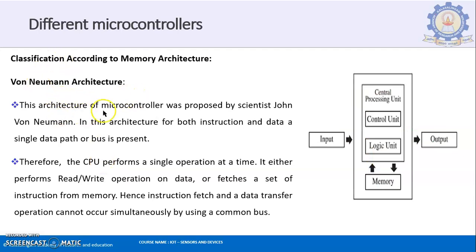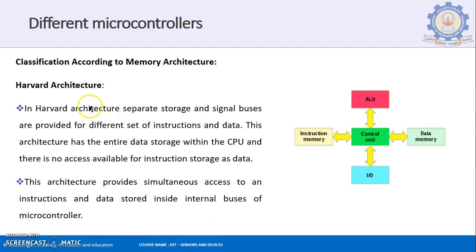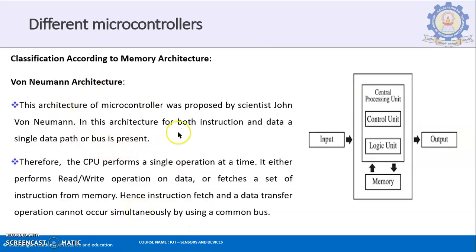Von Neumann architecture was proposed by scientist John von Neumann. In this architecture, a single data path or bus is present for both instructions and data, so you cannot access both at the same time. In Harvard architecture you could fetch both instructions and data simultaneously. In Von Neumann, since there is only a single data path, only one can be accessed at a time — the CPU performs a single operation at a time.